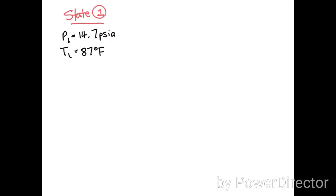At state one we're given that p1 is 14.7 psia and T1 is 87 degrees Fahrenheit, which is equal to 546.67 Rankine by adding about 460 to the Fahrenheit temperature.